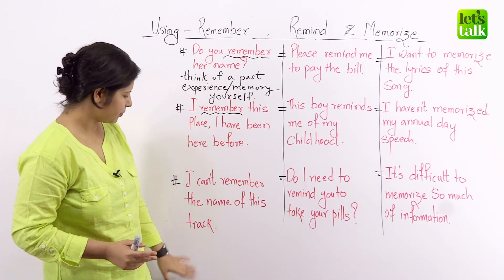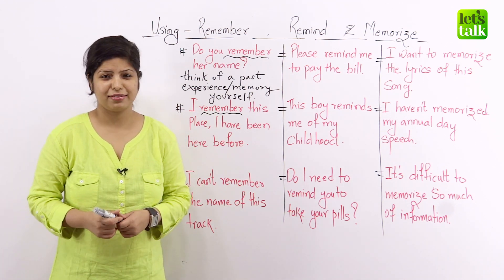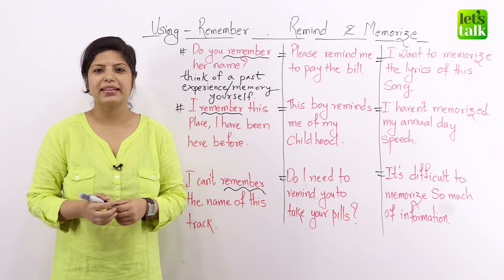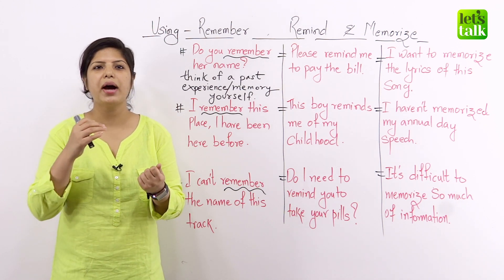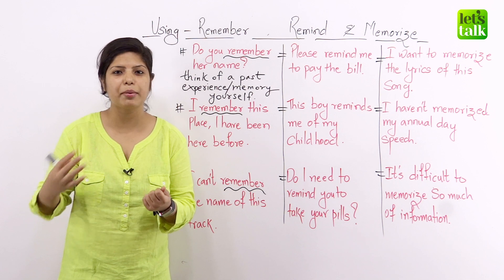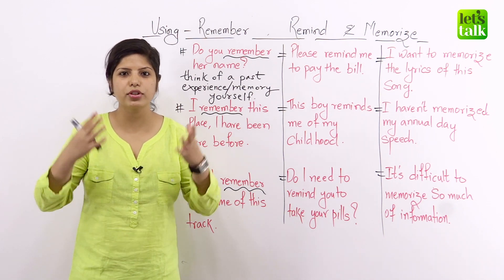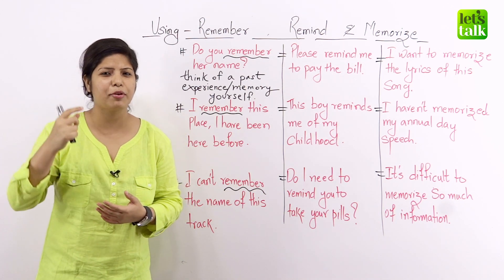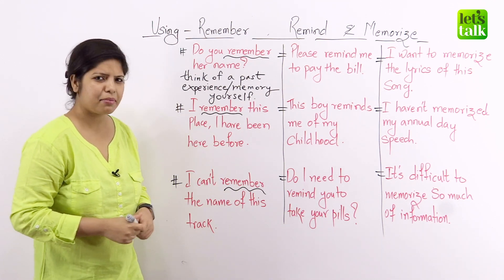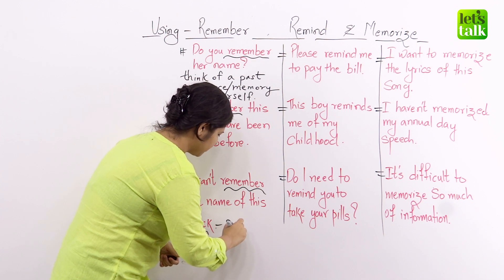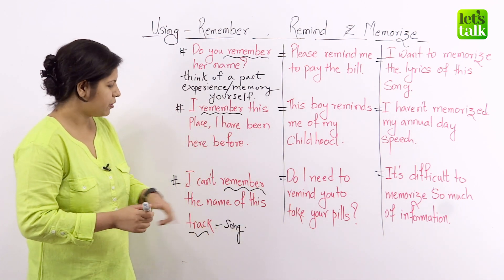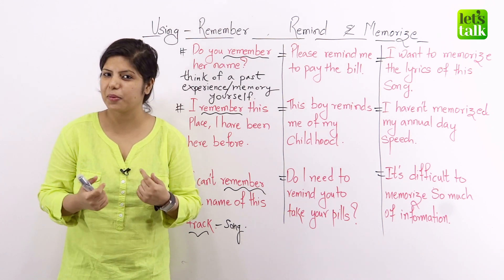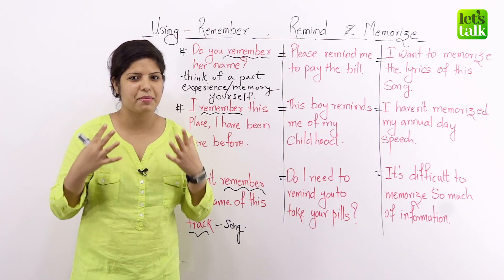The next one: I can't remember the name of this track. It does happen sometimes that you're listening to a great track you really like and you have heard it before, possibly many times, but at that moment you just can't remember it — you can't go back into your memory and think of the name of that particular track. A track is nothing but a song. So remember is always used when you yourself are trying to think of a past experience or a past memory.